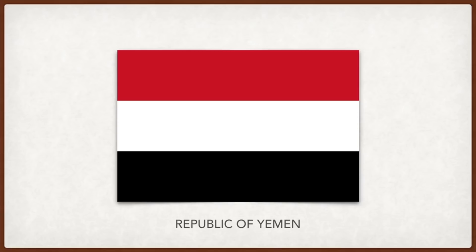Yemen: modeled after the Arab liberation flag. Black is said to stand for the dark days of the past, white represents a bright future, and red the blood of independence and unity.